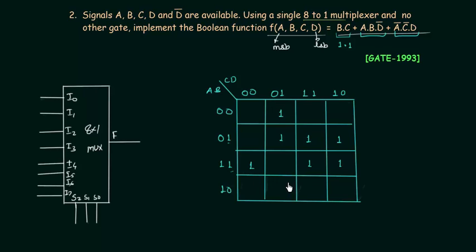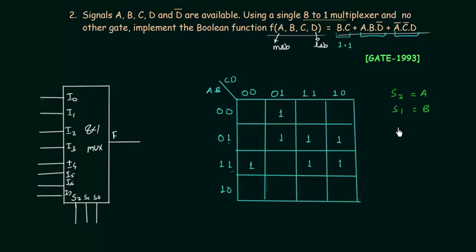Now we implement the Boolean function using the 8-to-1 mux. There are 3 selector variables. We assign S2 = a, S1 = b, S0 = c. The remaining variable d will appear on the input side.